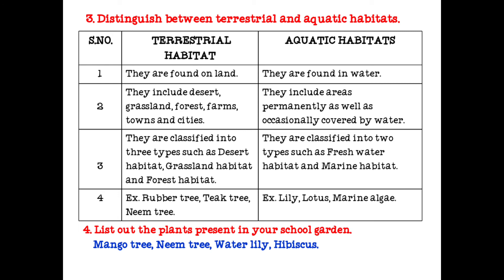Terrestrial habitat is classified into three types: desert habitat, grassland habitat, and forest habitat. Examples of terrestrial habitat are rubber tree, fig tree, and neem tree. Examples of aquatic habitats are lily, lotus, and marine algae.